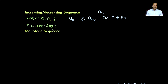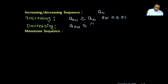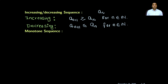Similarly, we can define what is a decreasing sequence. A sequence is a decreasing sequence if a_{n+1} is less than or equal to a_n, and this is true for all n belonging to the set of natural numbers. In other words, if you pick any two consecutive terms of the sequence, the next term is always less than or equal to the previous term, and the terms are getting smaller and smaller.